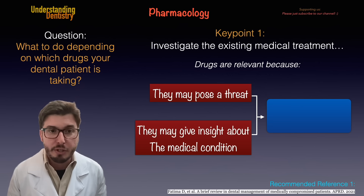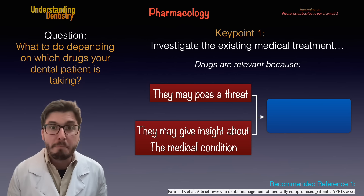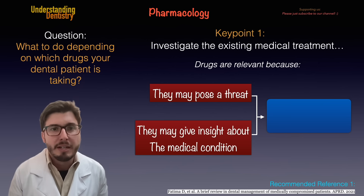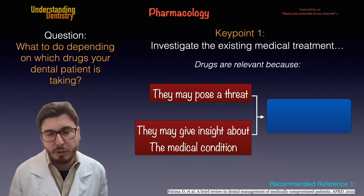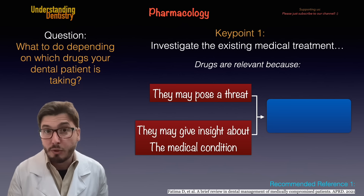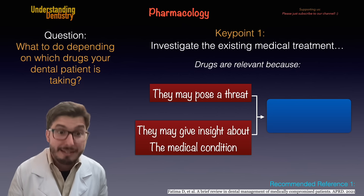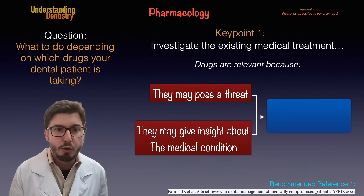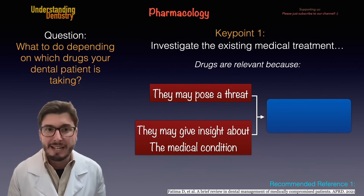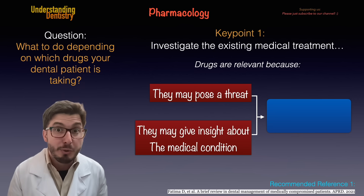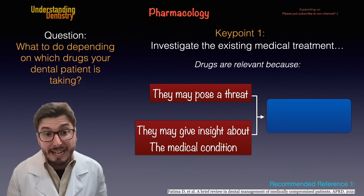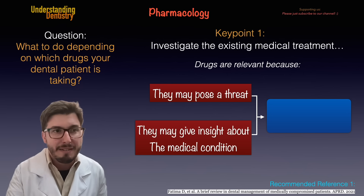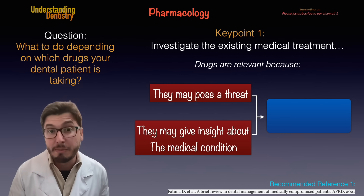The first key point we already have on our screen: we need to investigate the existing medical treatments. You are going to collect the medical history, just like the dental history, and do your clinical examination. Why? Because the drugs are relevant because they may pose a threat. We are going to talk about the main specific groups of drugs that will affect your dental treatment plan, and they may give insight about the medical condition of the patient — which can also have an impact on your dental treatment plan.